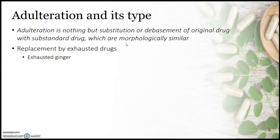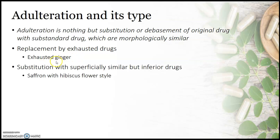There are basically five types of adulteration. The first type is replacement by exhausted drug. The best example is the replacement of original genuine ginger with exhausted ginger. Exhausted ginger is ginger from which the chemical constituents have already been extracted out.